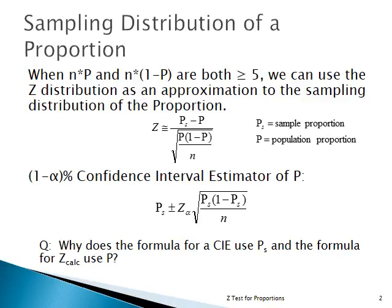We use the value from the Z table that gives our level of confidence, then multiply by the measure of variation. Under the square root sign we have P-sub-s times 1 minus P-sub-s divided by N. This is the first time you see the two formulas — one for a hypothesis test, one for a confidence interval — that are similar yet use different values. The Z formula uses the population parameter P under the null hypothesis; the confidence interval formula uses only the sample proportion.